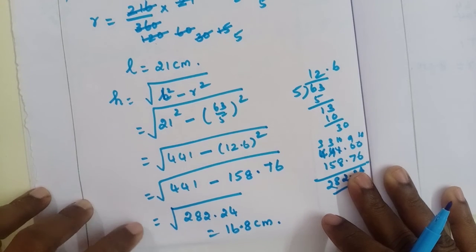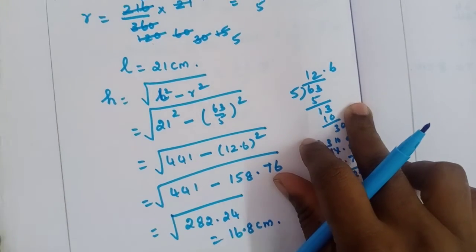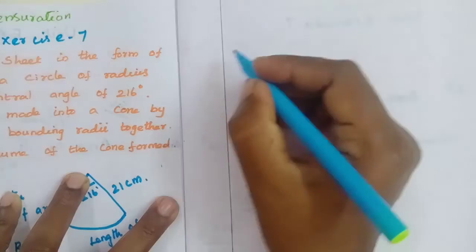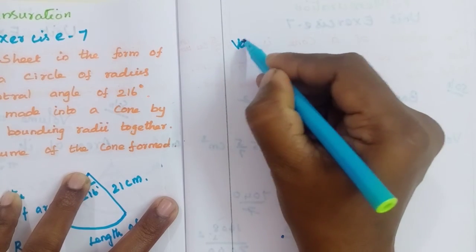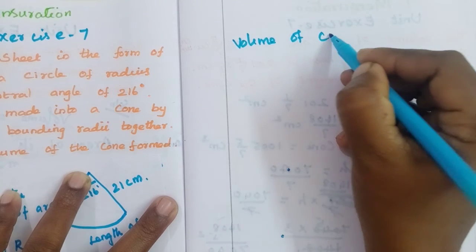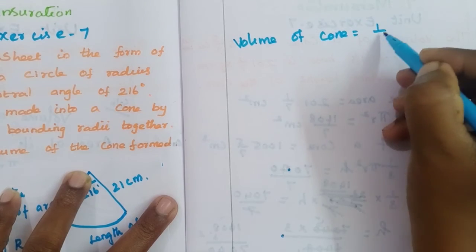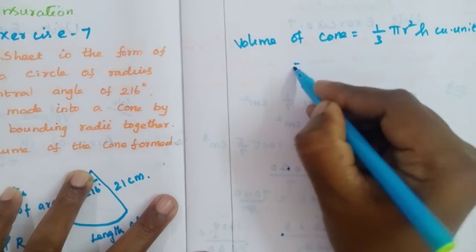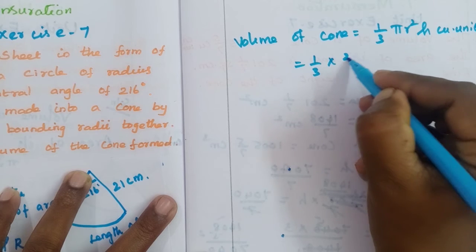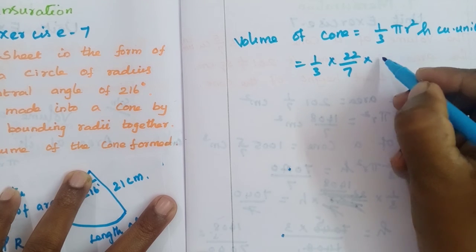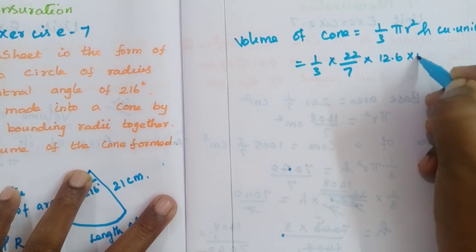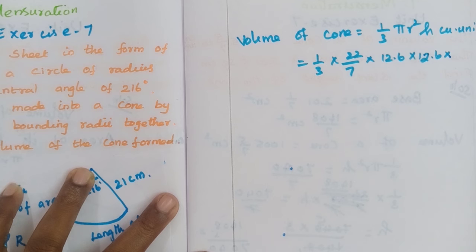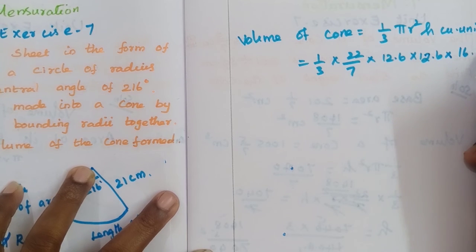Now we find the volume of the cone. Volume equals 1/3 pi R squared H cubic units. That's 1/3 into 22/7 into 12.6 into 12.6 into 16.8.